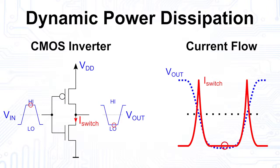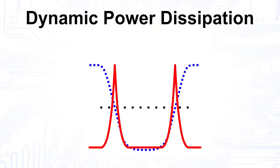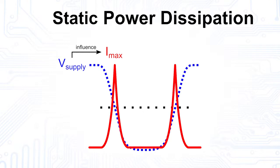This is called the dynamic power dissipation of the CMOS circuit, and it is mainly dependent on the number of switching operations, in other words the switching frequency, and the supply voltage, as it determines the maximum current during the switching operation.